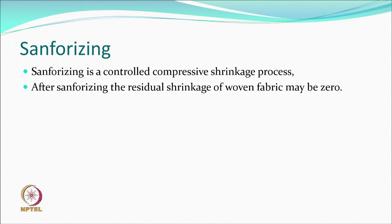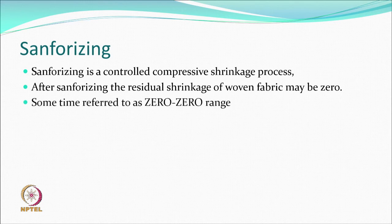Based on the efficiency of the process, the fabric may show zero shrinkage after washing. Because of this, the sanforizing machine is sometimes also called the zero-zero range — meaning zero shrinkage in the warp direction and zero shrinkage in the weft direction.